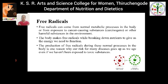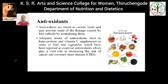Next, free radicals. Free radicals are defined as an atom or molecule that has an unpaired electron. These free radicals can come from our normal metabolic processes in the body and also from exposure to carcinogenic substances and harmful substances in our environment. When free radicals are formed in excess amounts in our body, they can cause damage to our cells and lead to several diseases.